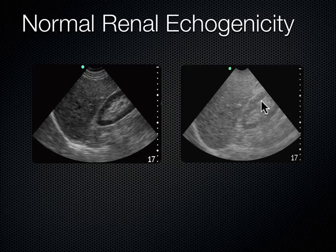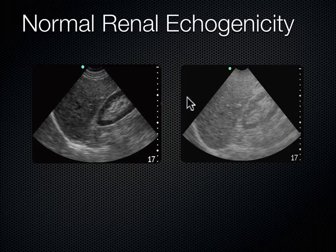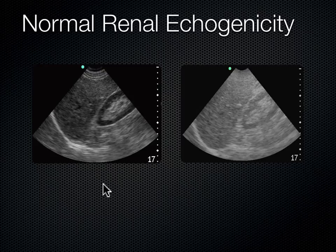In the over-gained image, the cortex and liver wash out together and it's hard to tell that the cortex is less echogenic than the liver. That's why echogenicity of the renal cortex relative to the liver is a useful measure of gain — I know my gain is set right when the kidney's cortex looks darker than the liver or spleen.